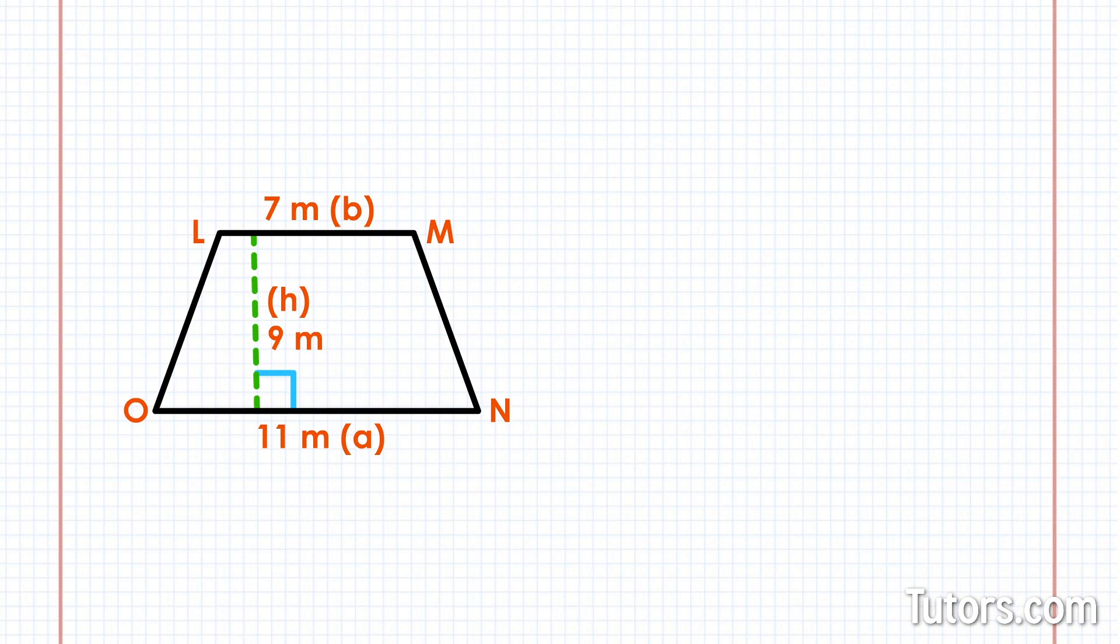First, let's plug it into our formula. Area equals eleven plus seven divided by two times nine. Pause the video for a moment and try it yourself. Did you get eighty-one square meters?